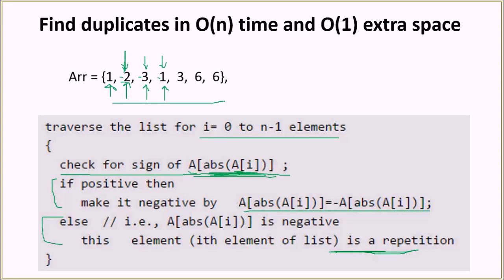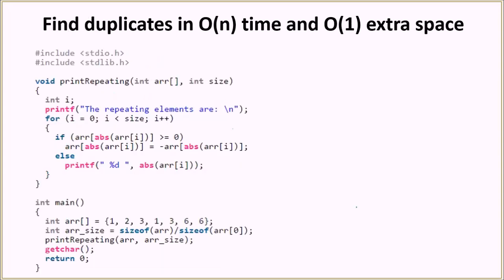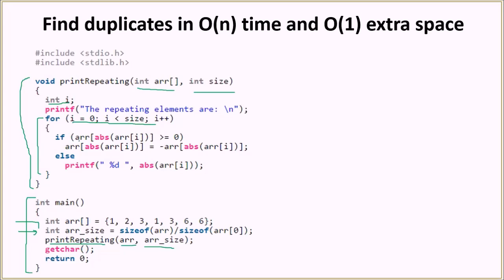Let's look at the code. In the driver function we have the array and calculate its size, then call the function print_repeating which accepts the array and its size as arguments. Inside this function, we have a for loop with index variable i. We calculate the absolute value of array[i] and use it as the index into the array. If the value there is not negative, we make it negative; otherwise, we print it, since the number has already been encountered once.